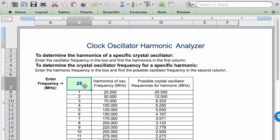Let's try another example. Let's enter in 50 megahertz. Now you can see that all the possible harmonics are listed here. For example, the fifth harmonic is 250, the tenth harmonic is 500, and so forth.